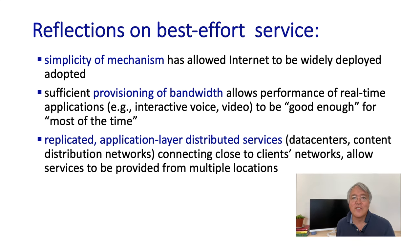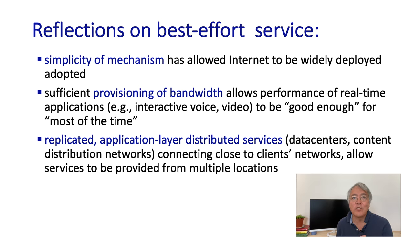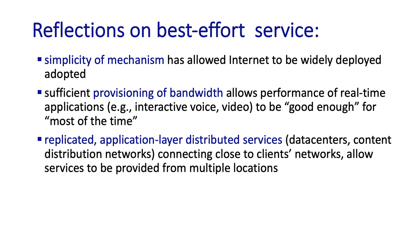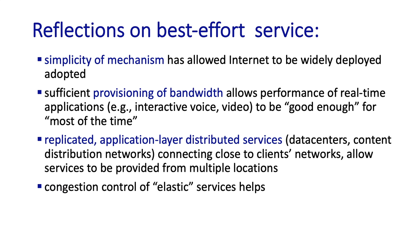This tremendous rise in the amount of distributed application-level infrastructure has really been critical to the success of best-effort service. One might say that the need for this kind of infrastructure arose because of the best-effort service model that was in place. And finally, for some types of service like email and the web, TCP congestion control can back off in the face of congestion, and that too has played an important role.